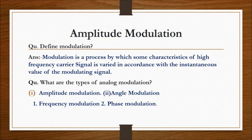In analog communication, the first practical is amplitude modulation. The first question that may be asked by the examiner is: define modulation. The answer is: modulation is a process by which some characteristics of a high frequency carrier signal is varied in accordance with the instantaneous value of the modulating signal. The next question on amplitude modulation is: what are the types of analog modulation?